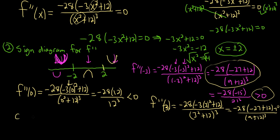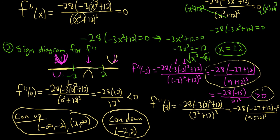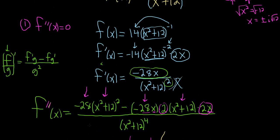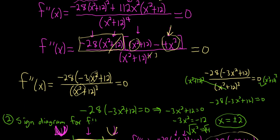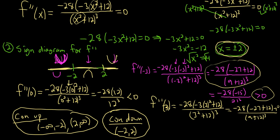Now we can write our answers. Concave up from negative infinity to negative 2, and also from 2 to infinity. Concave down from negative 2 to 2. These rational function problems are the longest because you have to use the quotient rule. Basically, you take the derivative twice, set it equal to 0, do some tricky factoring to get plus or minus 2, put those on a number line, pick test points, and plug them into the second derivative. Positive means concave up; negative means concave down. Once you can do one of these on your own, you pretty much have it — they're all the same idea every time.